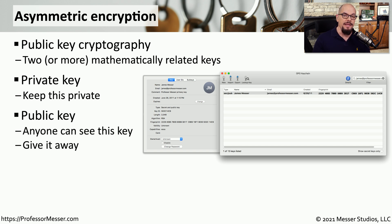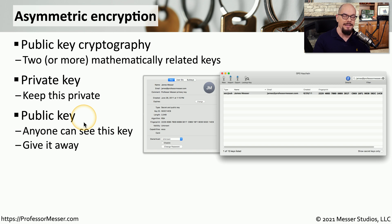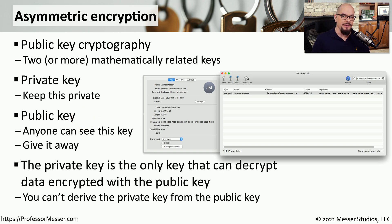There is another key that is mathematically related to the private key called the public key. This is the key that you give to everybody — you can post it on a public key server, hand it out in email messages, or put it on your website. Everyone who wants to encrypt information and send it to you needs to have your public key. Once somebody encrypts data with that public key, the only way to decrypt that information is by using the corresponding private key, which is a key that only you have access to.